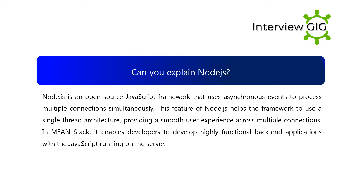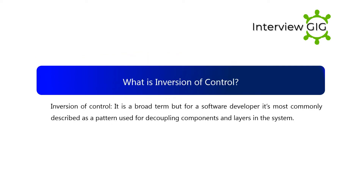Can you explain Node.js? Node.js is an open source JavaScript framework that uses asynchronous events to process multiple connections simultaneously. This feature helps the framework use a single-thread architecture, providing a smooth user experience across multiple connections. In MEAN stack, it enables developers to build highly functional back-end applications with JavaScript running on the server.